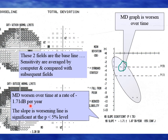For example, here the rate of progression is 1.7 dB per year. The most accepted rate is one decibel per year, which will mostly ensure that the patient will not suffer a poor quality of life regardless of age. But when it is higher than one decibel per year, this is a red flag to change the treatment and target a lower IOP.